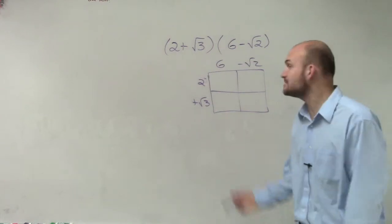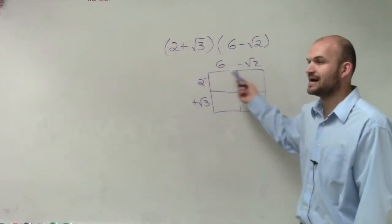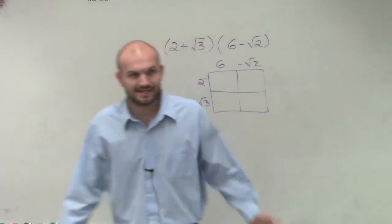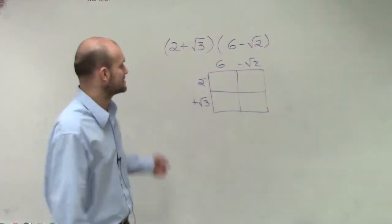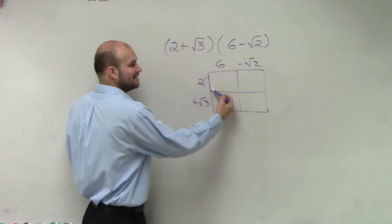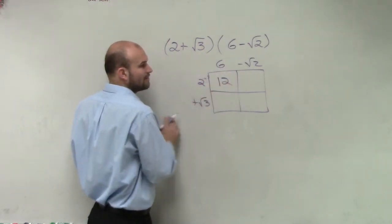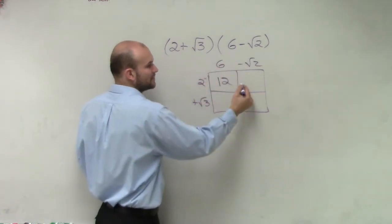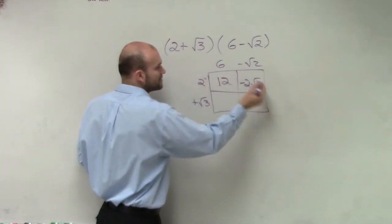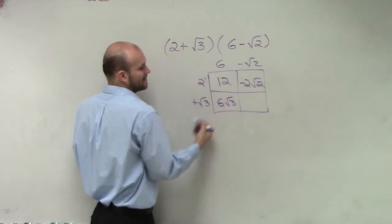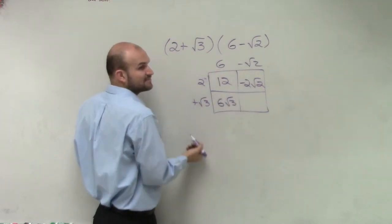Then we simply find the area of each box, so you multiply length times width. So I do 2 times 6, which is 12, 2 times negative square root of 2 is negative 2 square root of 2, 6 times square root of 3 is 6 square root of 3, and square root of 3 times negative square root of 2 is negative square root of 6.